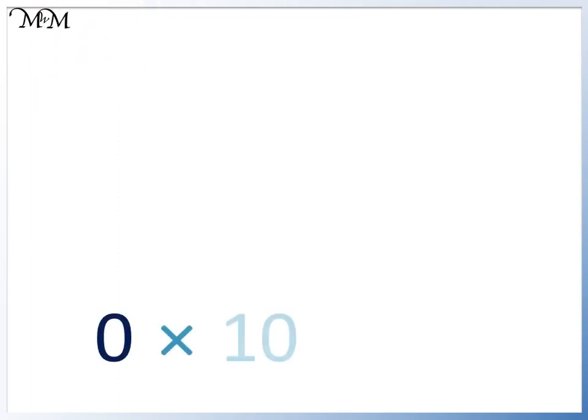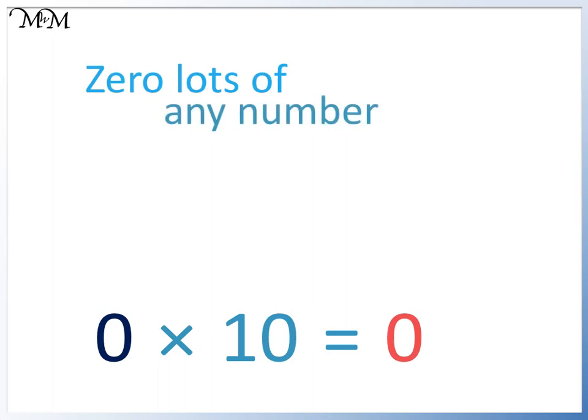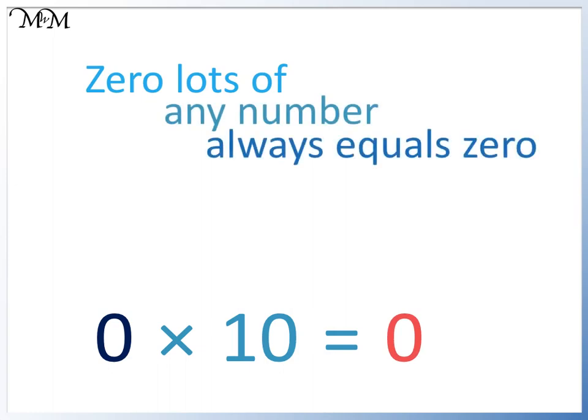If we take away this last box, we have no eggs. We have 0 lots of 10. There are no eggs, so 0 times 10 equals 0. If we have a 0 in our multiplication, the answer is 0. 0 lots of any number always equals 0.